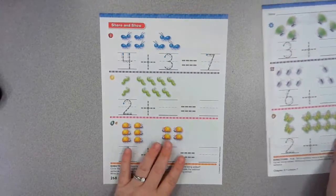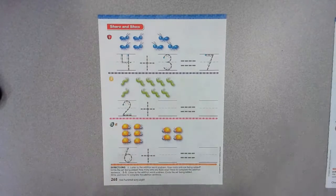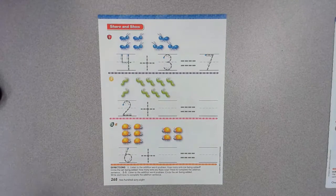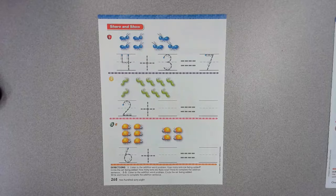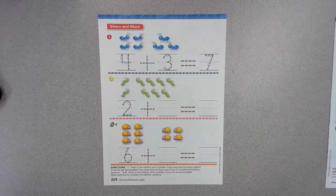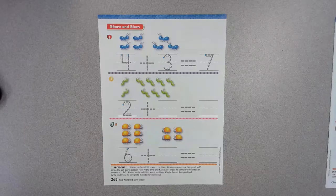On this page we have three questions to go through. Listen for one moment while I say the word problem: there are four ants, some more ants are added to the group, there are seven ants in all.